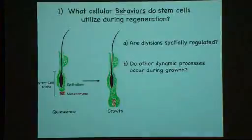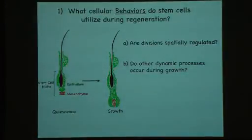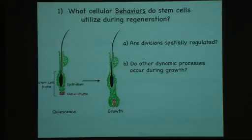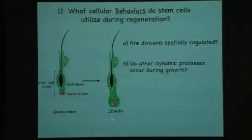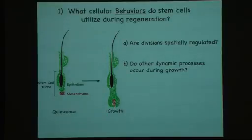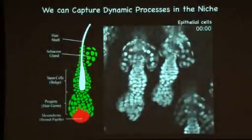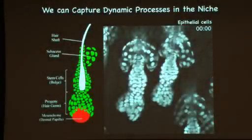We can now ask many questions. What behaviors have stem cells adopted during regeneration? In particular, whether divisions are spatially regulated. As you can appreciate, structures such as the hair follicle are very well organized and grow asymmetrically. We hypothesize that division may be regulated spatially in order to achieve growth in only one direction. We also wanted to ask whether other dynamic processes would take place.